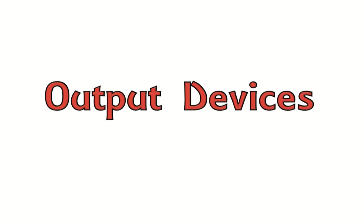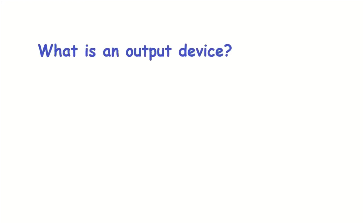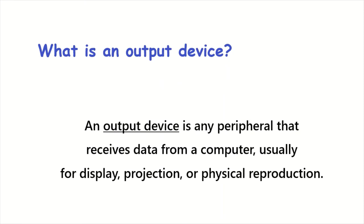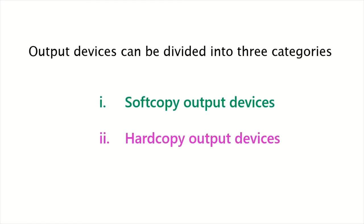Output devices. What is an output device? An output device is any peripheral that receives data from a computer, usually for display, projection, or physical reproduction. Output devices can be divided into three categories: soft copy output devices, hard copy output devices, and sound output devices.